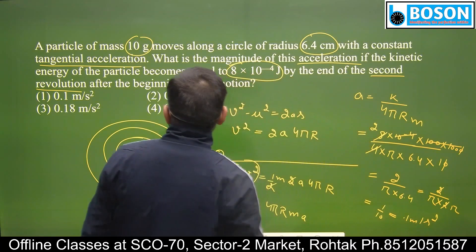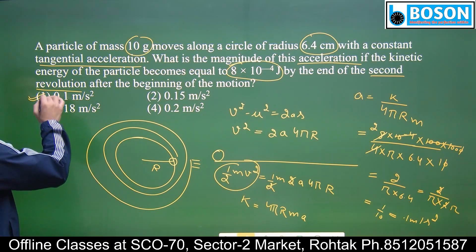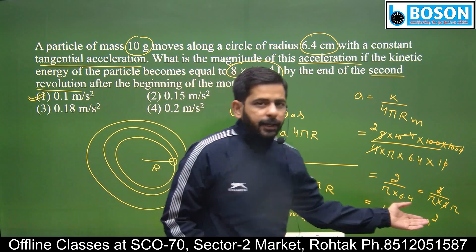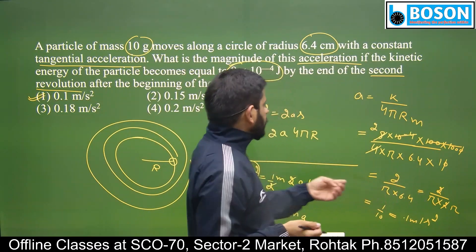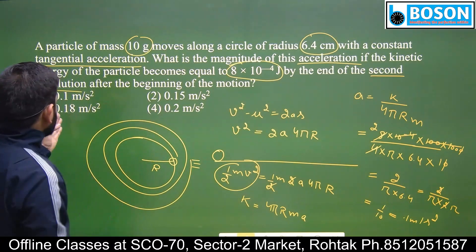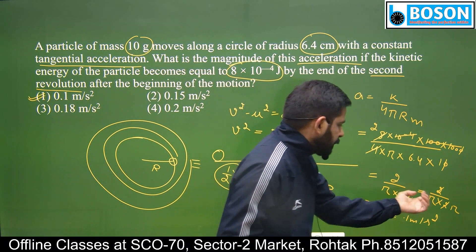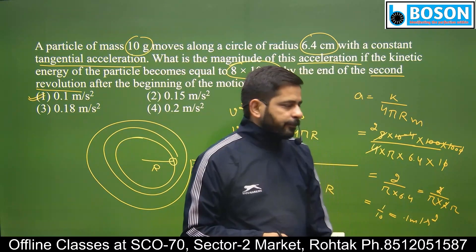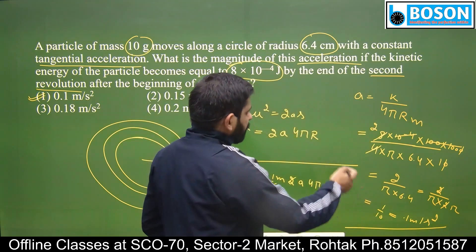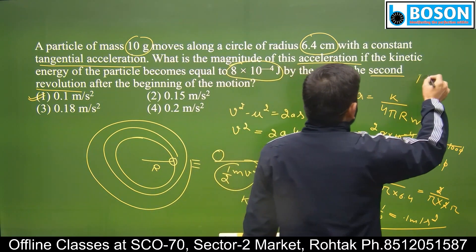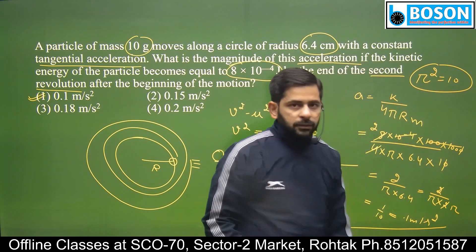इसके आसपास अंसर आना चाहिए। 0.1 के आसपास कोई अंसर है? एक अंसर है आपका — तो this is your correct answer। यह बहुत ही important trick है। जब भी numerical में options थोड़े दूर-दूर हों, वहां पे approximate calculation करके आप answer निकाल सकते हैं। और यहां पे जो हमने calculation का point सीखा वो है: π² की value को हम approximately 10 के बराबर मान सकते हैं। Thank you।